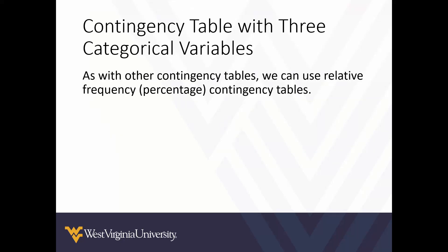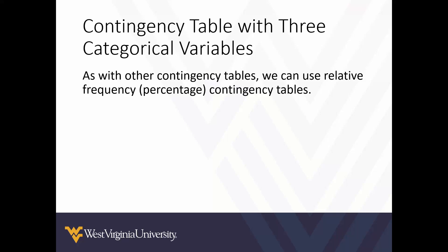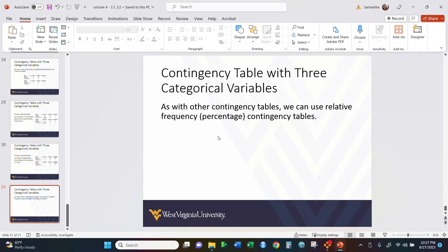As with other contingency tables, we can use relative frequency contingency tables, meaning we can add in percentages. We treat these the same way: divide by our totals and convert from decimal to percentage. That's all for today — feel free to get started on your homework, and if you have questions, send an email.